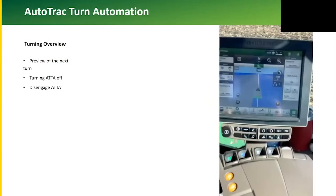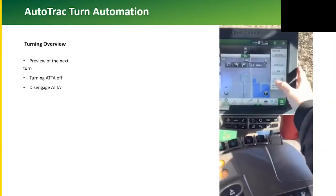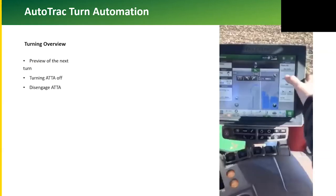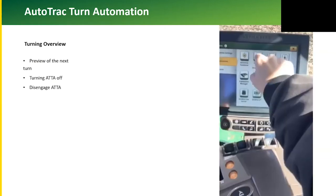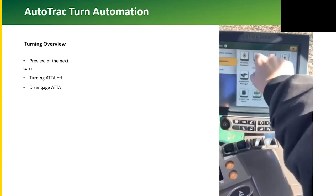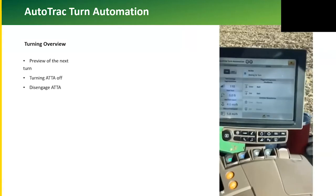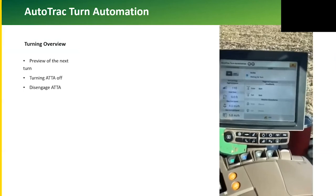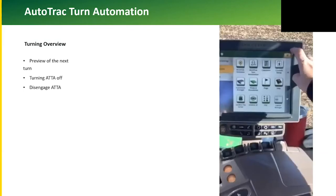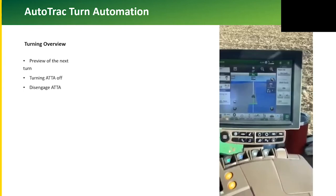We can also adjust whether we're going to turn left or right and how many skip passes we need to do. In this operation, we are doing a skip pass. We can also see our status icon to ensure that the machine is going to slow down and turn on the headland.